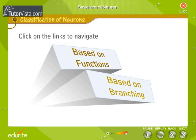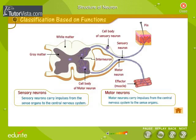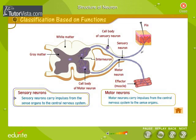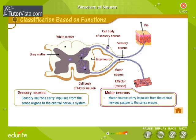Neurons are classified as sensory neurons and motor neurons. Sensory neurons carry impulses from the sense organs to the central nervous system. Motor neurons carry impulses from the central nervous system to the sense organs.